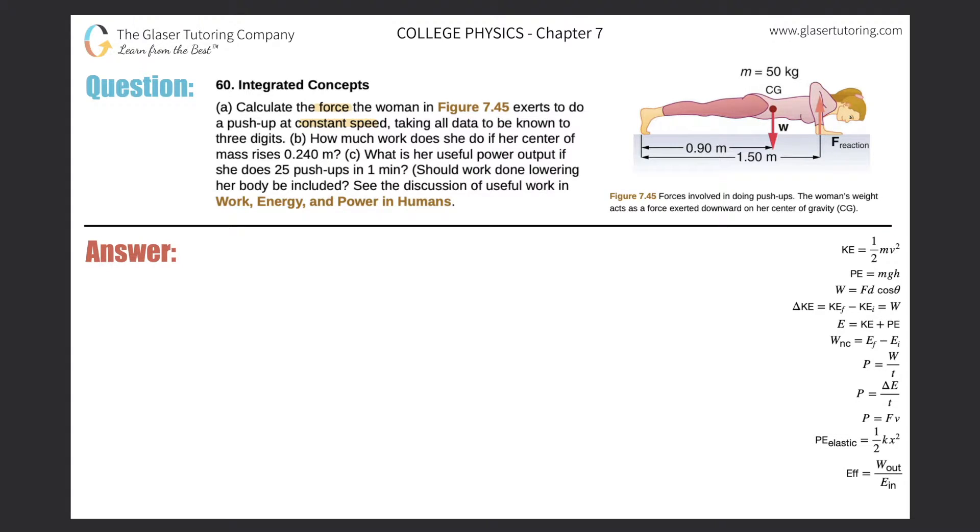Now let's just draw a free body diagram of what's going on. I'll call this letter A. Should be fairly straightforward. She has a weight, and that weight is pointing directly down.